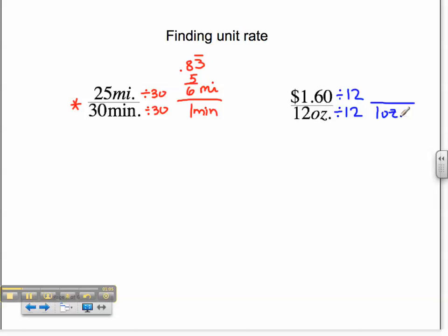$1.60 divided by 12 leaves us with 0.1333, and those threes are repeating. That doesn't make sense to convert to a fraction because it's money. Therefore, we will round to $0.13 for 1 ounce.